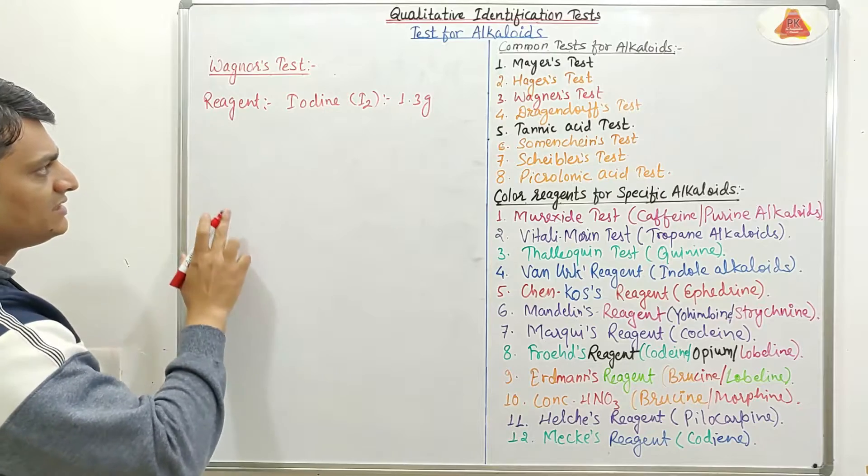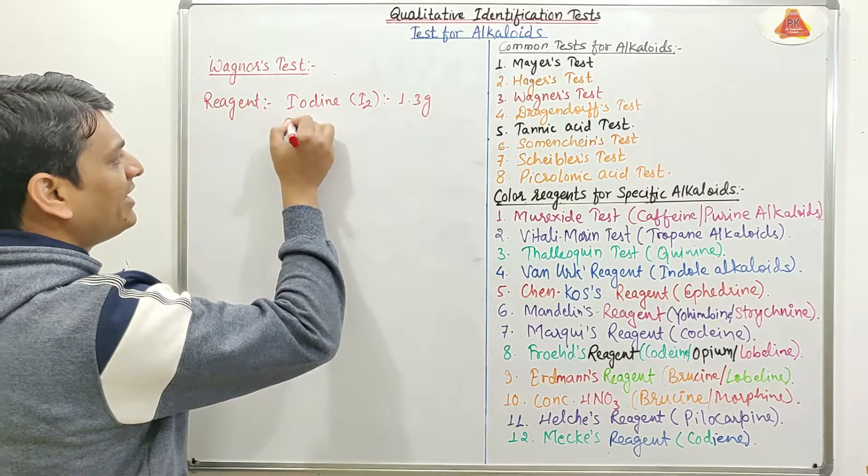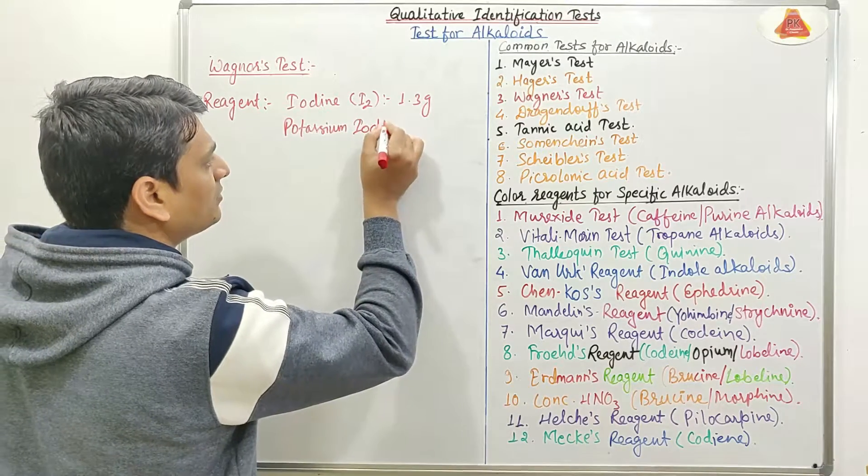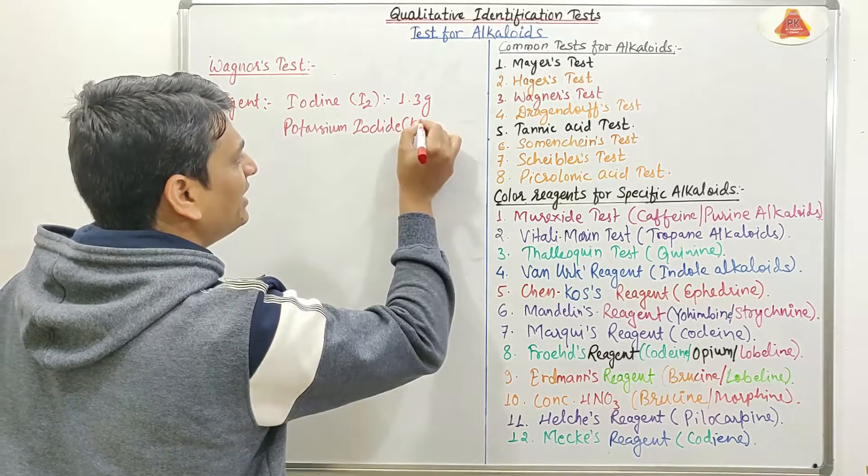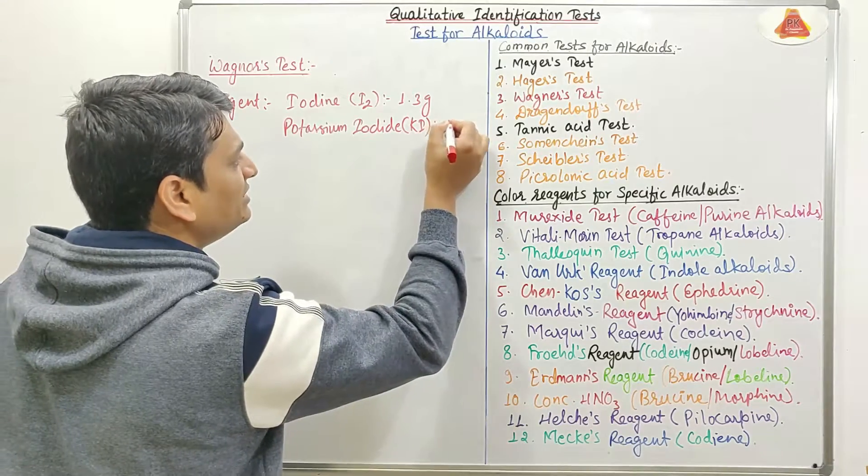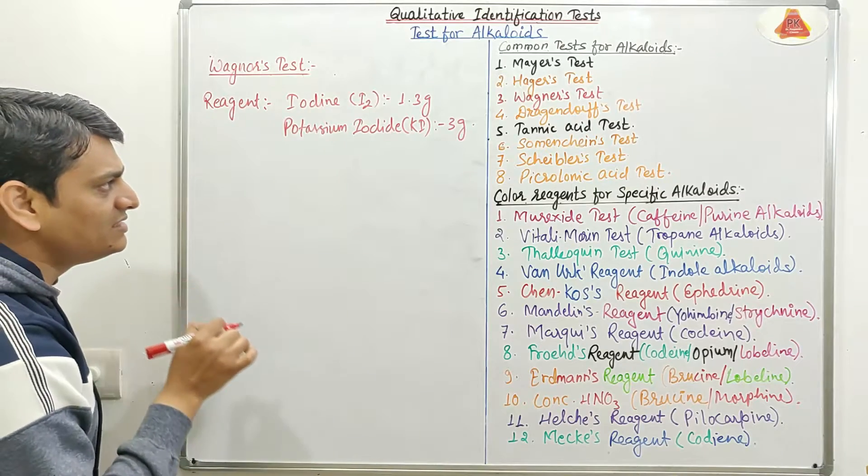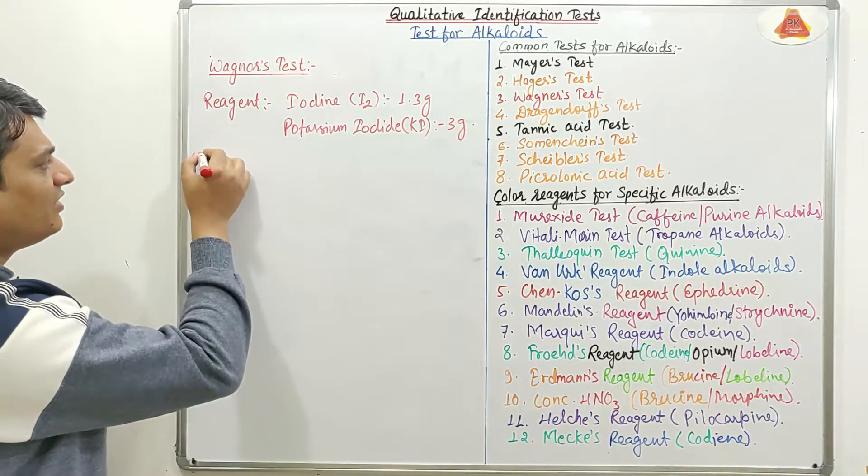And the second material will be potassium iodide, which is denoted by KI, and the amount will be 3 grams. Now this I2 and KI will be dissolved in 100 ml of distilled water.